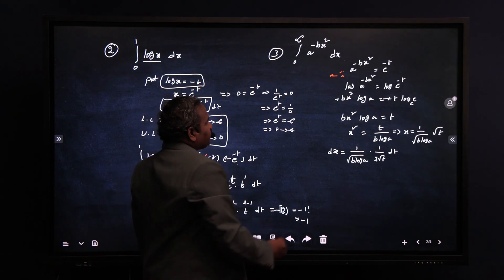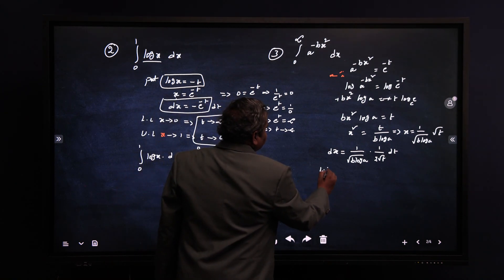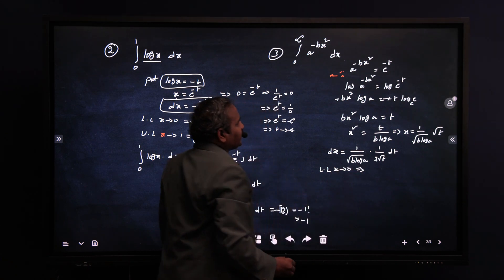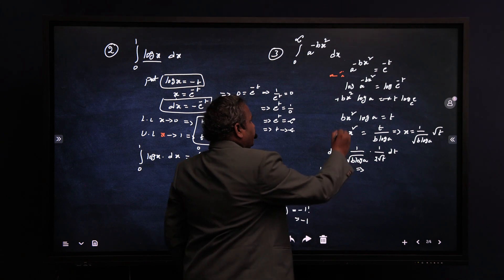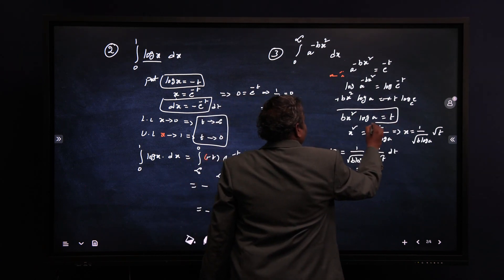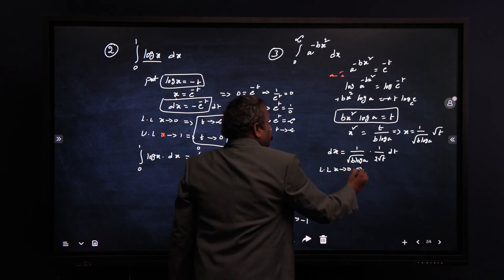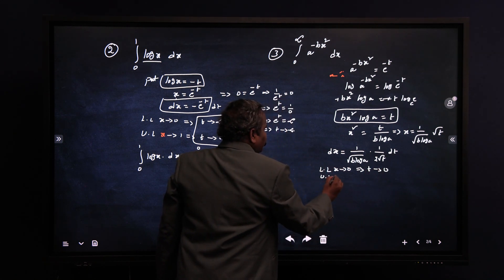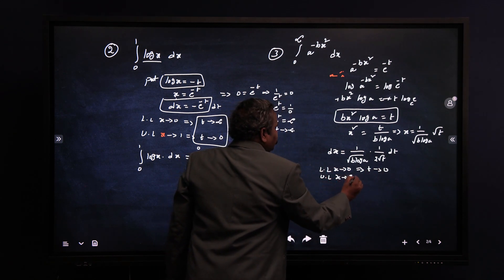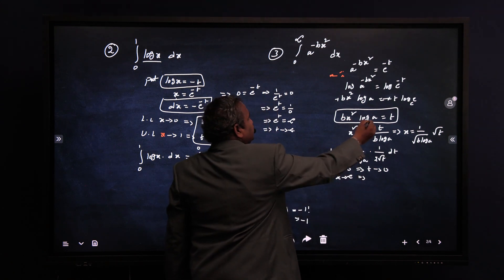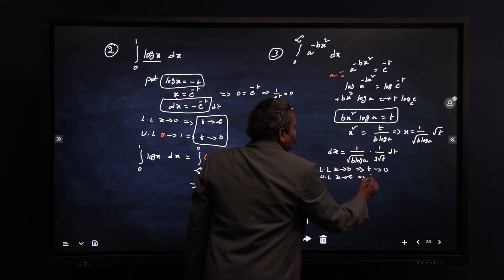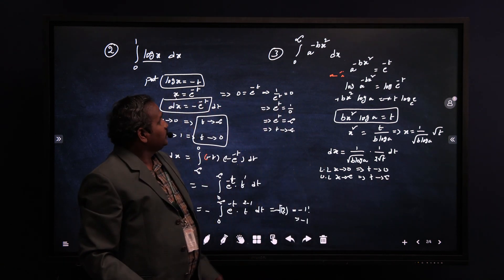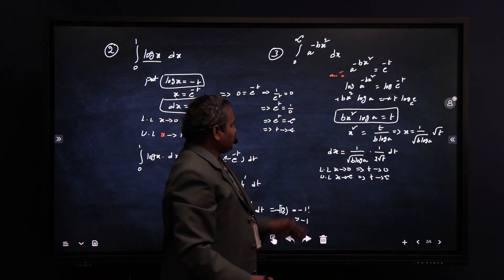For the lower limit, x = 0 gives t = 0. For the upper limit, x = infinity gives t = infinity. Now substitute all these values into the given integral.